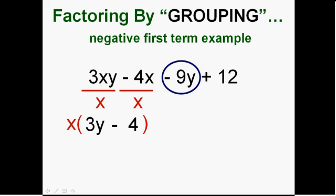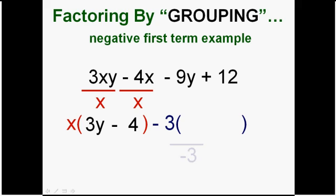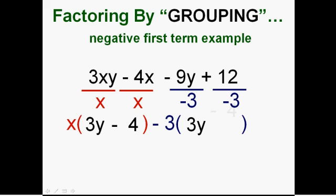Now in the next group you might think I'm going to take out a 3, but since the first term is negative, remember what we said about when the first term that we're factoring is negative. We don't want to take out a positive 3 but rather in this group let's take out a negative 3. And dividing by negative 3, negative divided by negative, I get plus 3y.